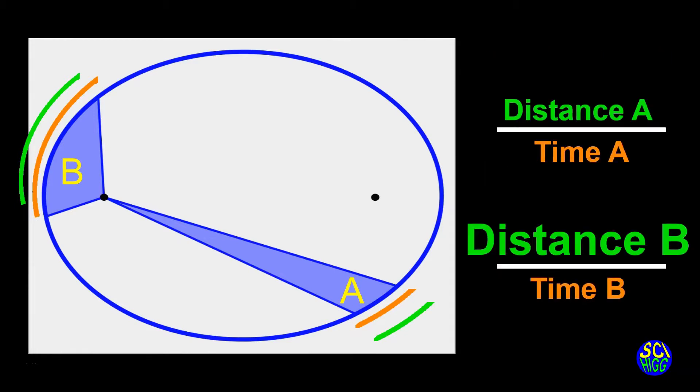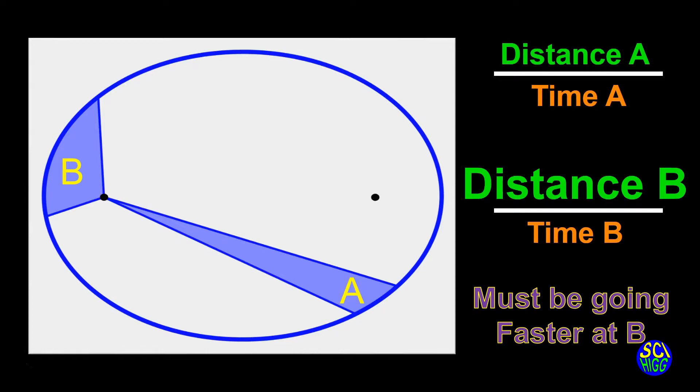So, rate or speed is distance over time, and if the distance at B is larger, and these times are the same, the object in orbit must be traveling faster when it goes through that section of its orbit represented by B.